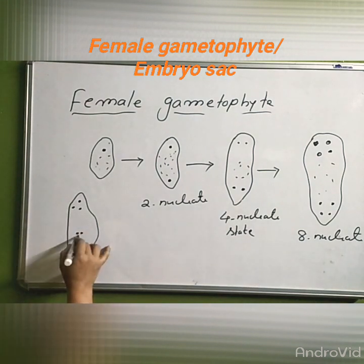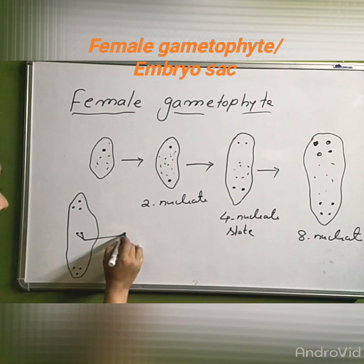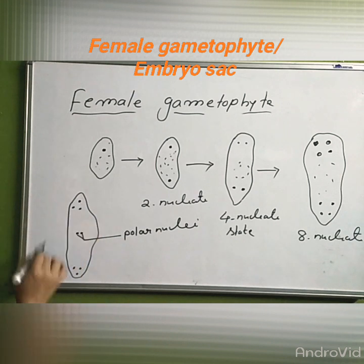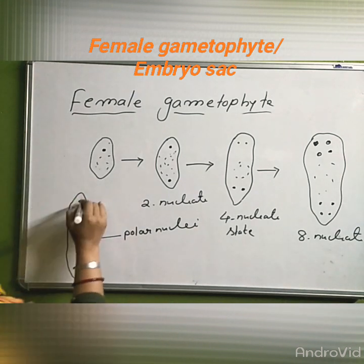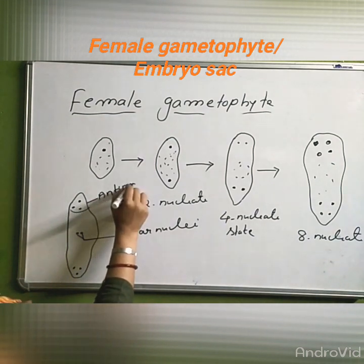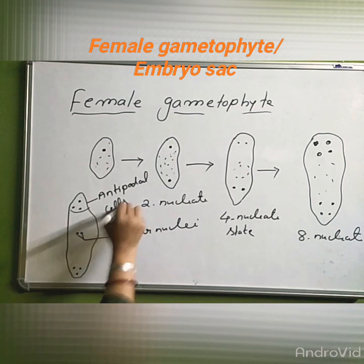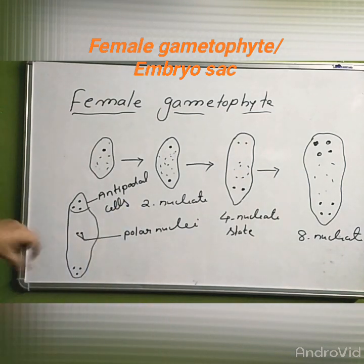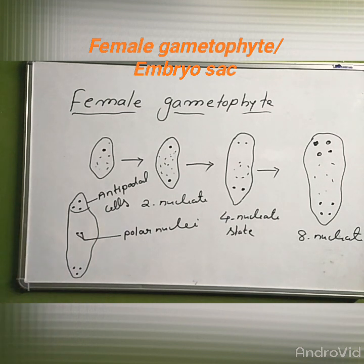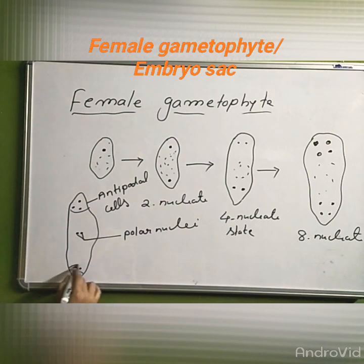The nuclei that come to the central point form the central cell. These are called polar nuclei. The three cells at the other end are called antipodal cells. These cells can be written as antipodal cells — alpha and other cells are referred to as antipodal cells.